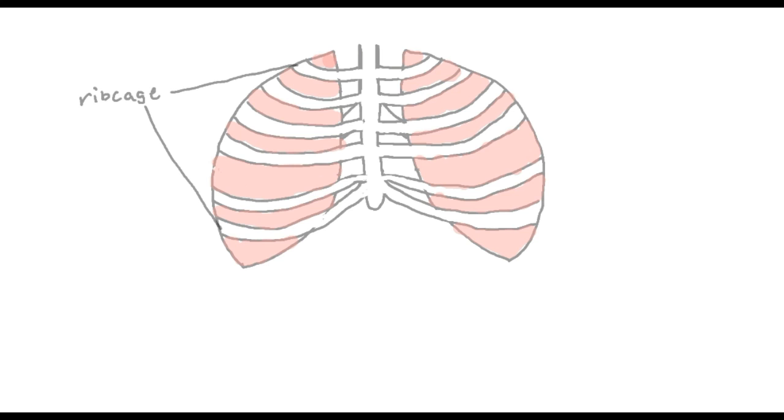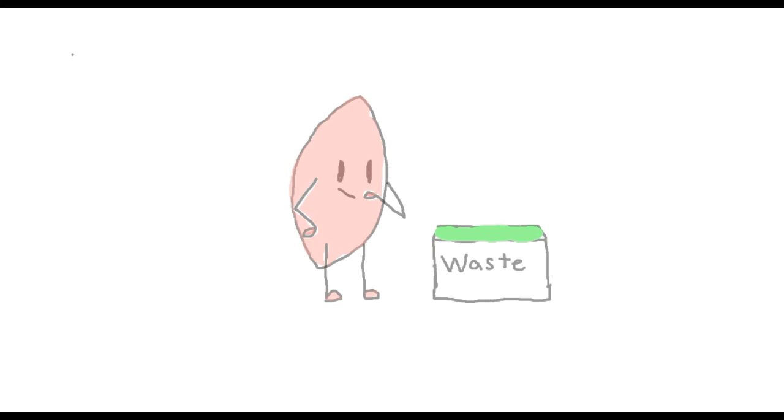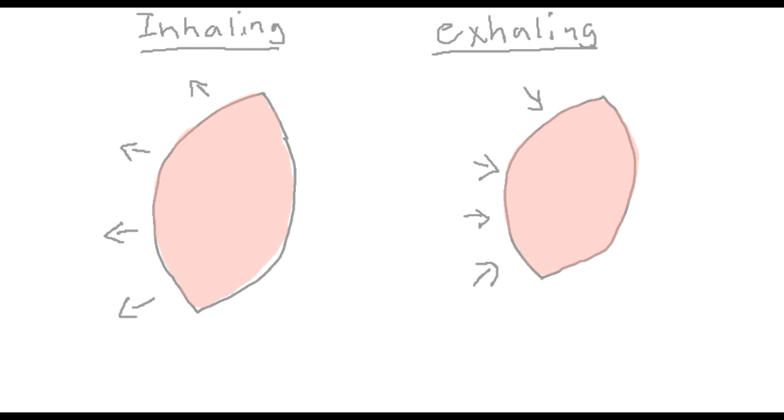The lungs are pink cone-shaped organs located below the ribcage. The lungs are the main organs of the system, probably because they manage waste. These two organs stretch while inhaling and shrink when exhaling.